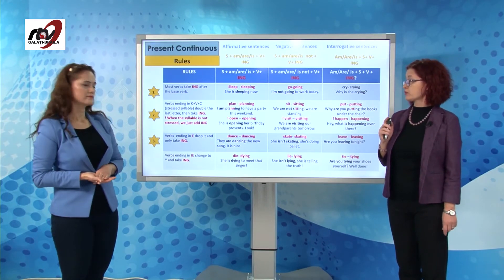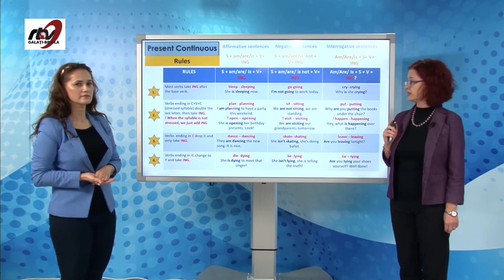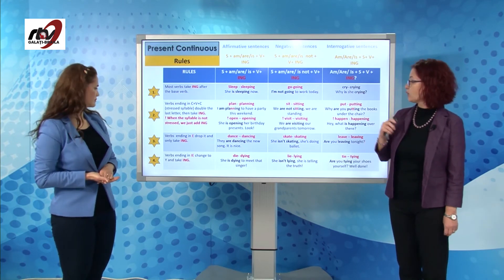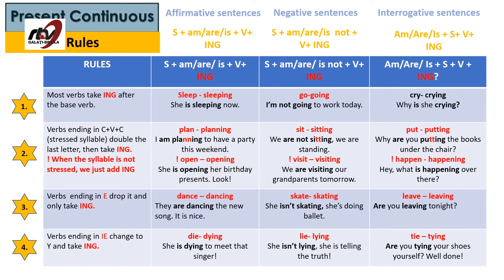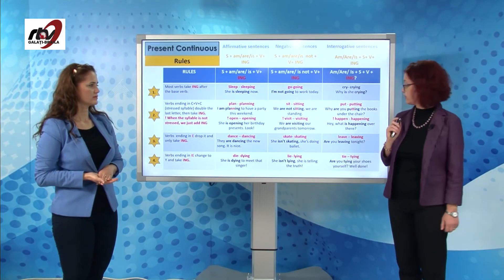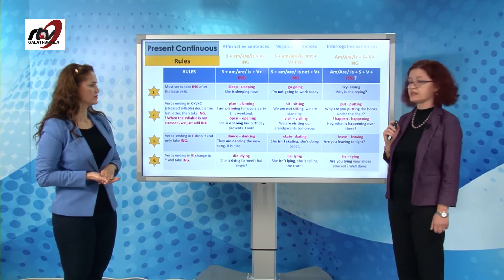The last rule, which is a bit more difficult, is for verbs ending in IE — they change IE to Y and then take -ing. Die → dying, she's dying to meet the singer, she's very happy about it. Lie → lying, she's not lying, she's telling the truth. Tie → tying — are you tying your shoes yourself? Well done.